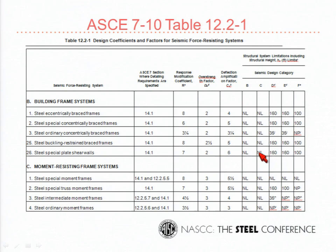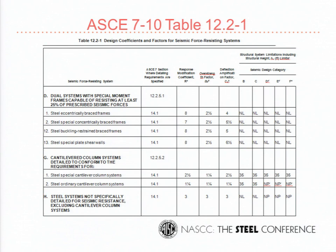Looking at the other systems: dual systems are allowed with no limits at all. Cantilever column systems, much like ordinary concentrically braced frames, are limited to 35 feet. That system table has 84 line items on it — I've shown you the 20 we can use for steel in high seismic. Just to juxtapose, in low seismic you can do whatever you want.